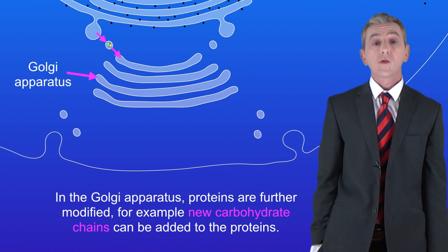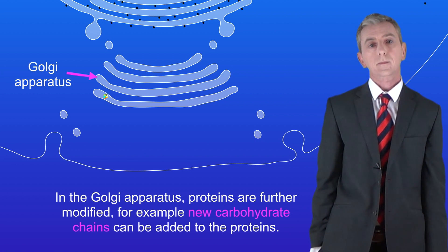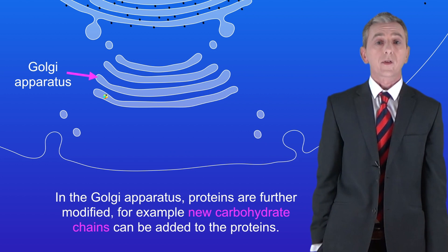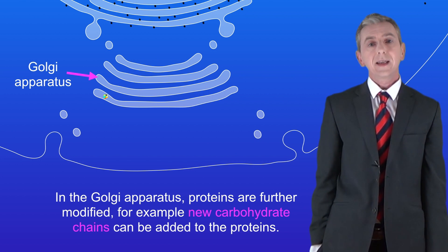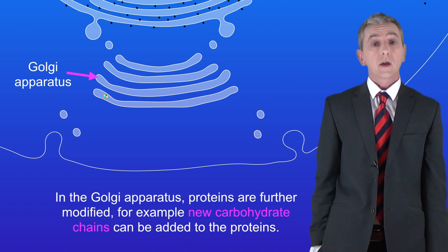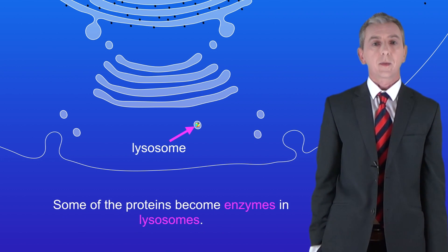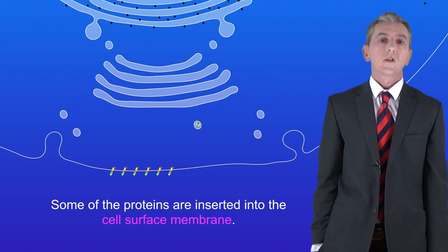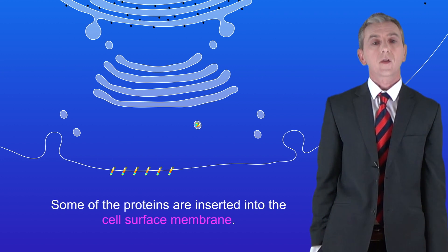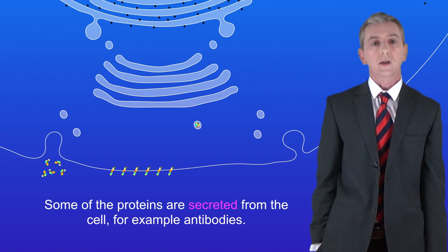In the Golgi apparatus, proteins are further modified — for example, new carbohydrate chains can be added to the proteins. Once the proteins have passed through the Golgi apparatus, they leave in vesicles. The proteins now have three different destinations: some become enzymes in lysosomes, some are inserted into the cell surface membrane, and finally some are secreted from the cell, for example antibodies.